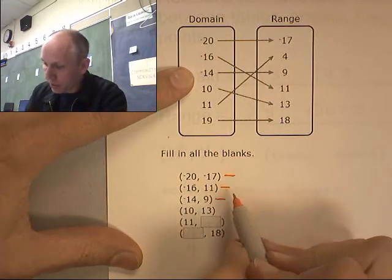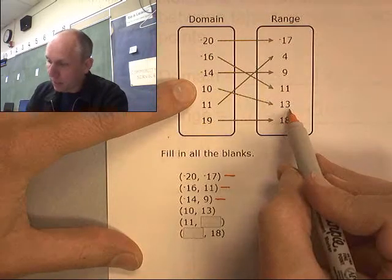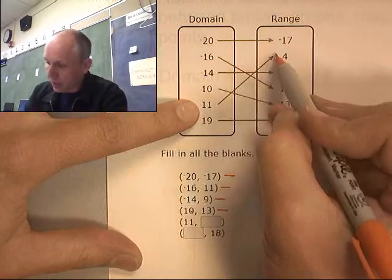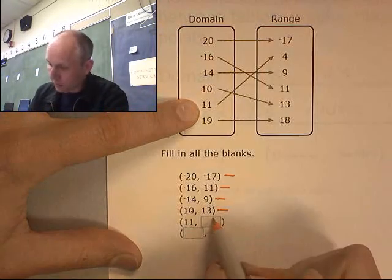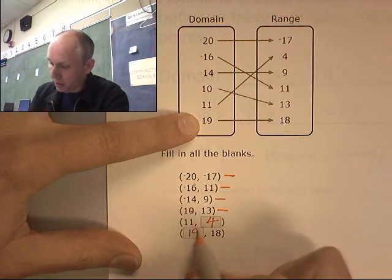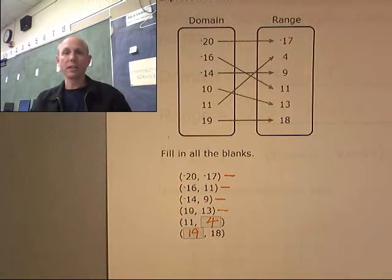10 is mapping to 13. There's 10 mapping to 13. 11 goes with 4. 11 goes with 4. And 19 goes with 18. 19 goes with 18. There you go.